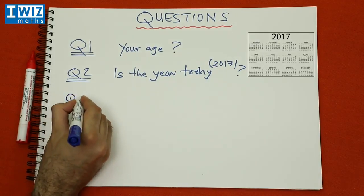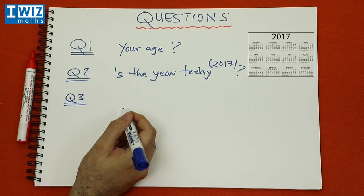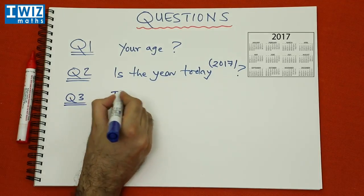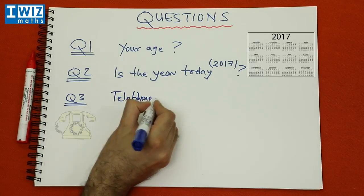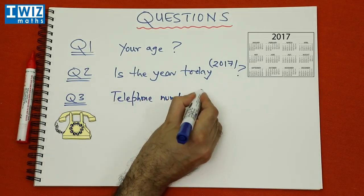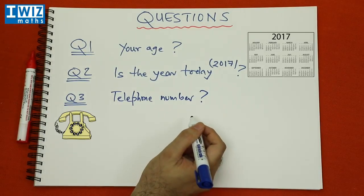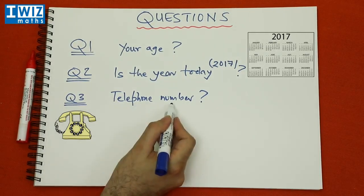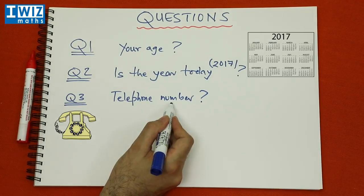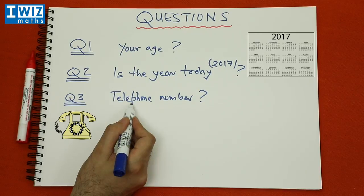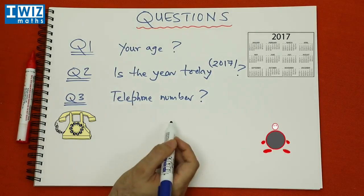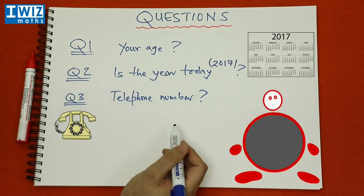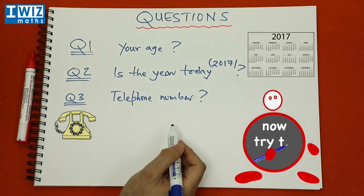Question number three is a slightly harder question: work out whether your telephone number is a prime number or not. If you don't have a telephone, find a friend or family member and try to work out whether their telephone number is prime. First try it with your own number, then work out whether it is a prime number or not. These questions should give you a good sense of what prime numbers are, so get yourself some pen and paper and have a shot at them.